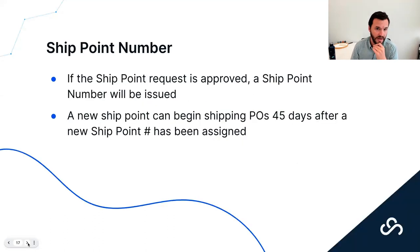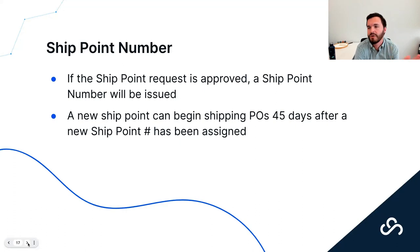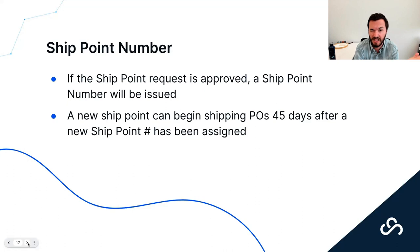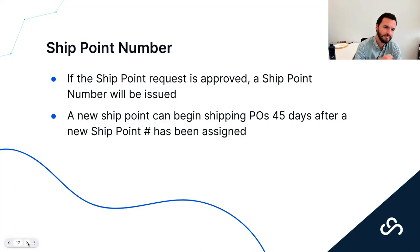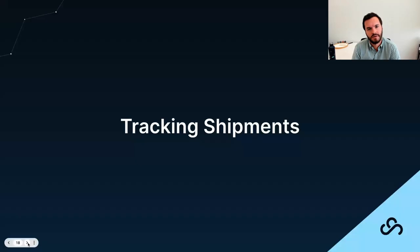After submission, if the ship point request is approved, a ship point number will be issued — approximately 48 days after approval. A new ship point can begin shipping POs 45 days after the ship point number has been assigned. So there are three thresholds: approval, number issuance, and then the 45-day waiting period before you can actually start shipping.